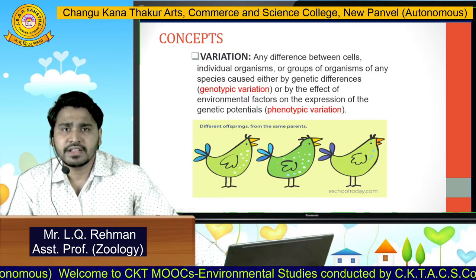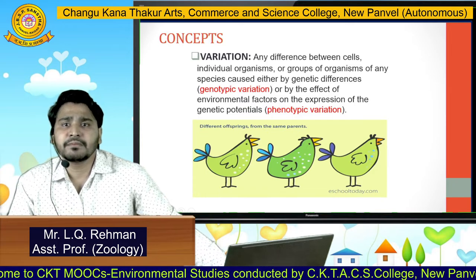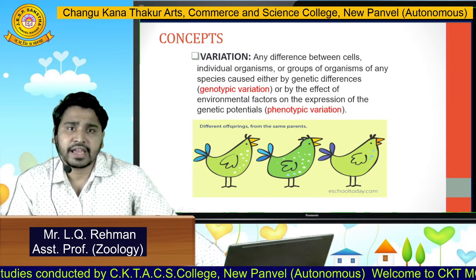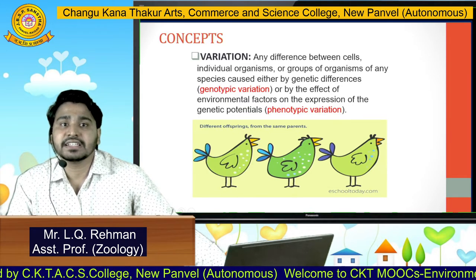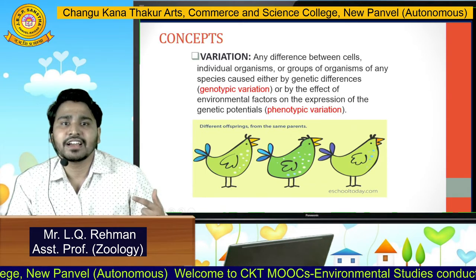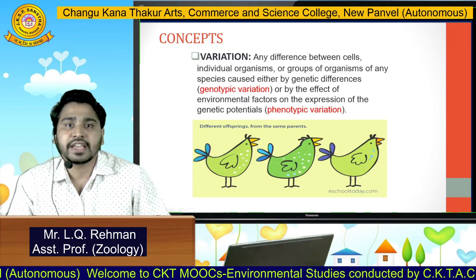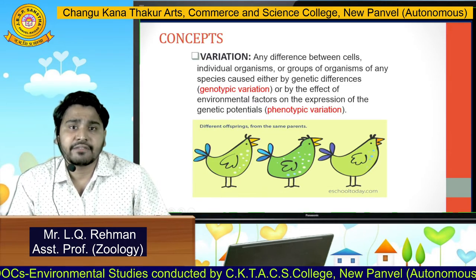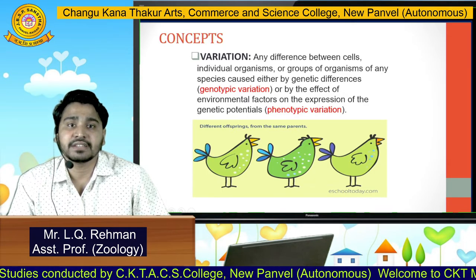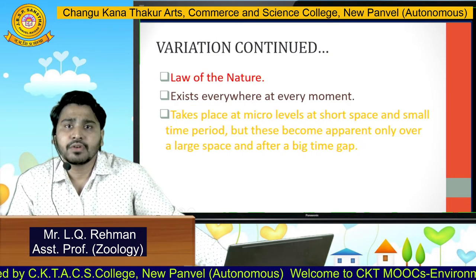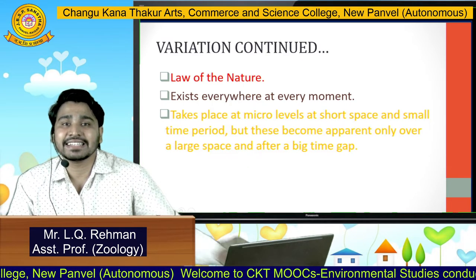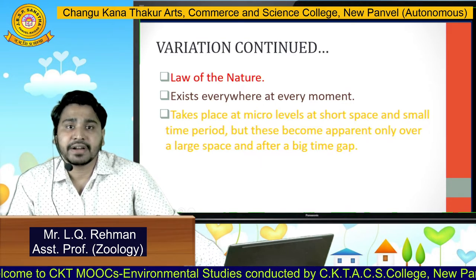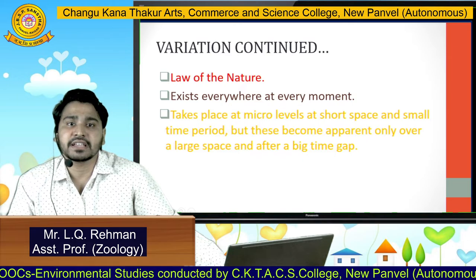Moving forward, we will look at the concept of variation. What does variation mean? Any difference between cells, individual organisms, or groups of organisms of any species, caused by either genetic differences — called genotypic variation — or by the effect of environmental factors on the expression of genetic potentials — called phenotypic variation. In this diagram, you can see different offspring from the same parent; this is what variation means. Variation is the law of nature and exists everywhere and at every moment. It takes place at micro levels, over short space and small time periods, but becomes apparent only over large space and after a big time gap.